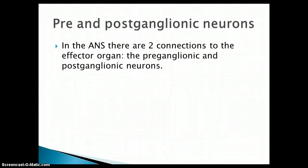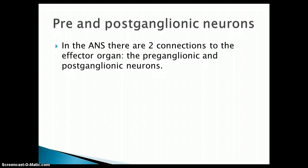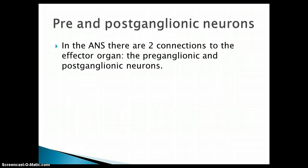So now let's talk about pre- and postganglionic neurons. In the autonomic nervous system, there are two connections to the effector organ — the preganglionic neuron, the first neuron, and then the postganglionic neuron. In the central nervous system, you see only one neuron connecting from the brain to the effector organ, but here you have two different neurons.